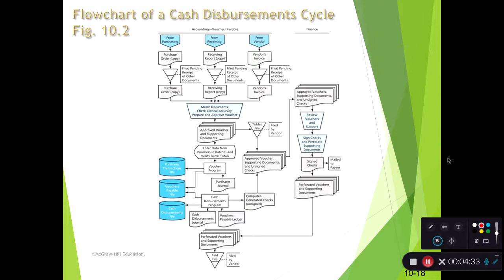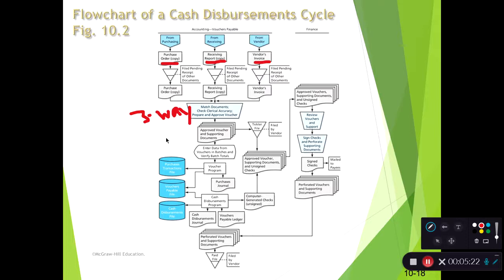Looking at the cash disbursements process, this flowchart is abbreviated to focus just on the cash disbursements piece. We have a purchase order and a receiving report — we don't see what goes into creating those because we're just focused on cash disbursement. We have three pieces of information: the purchase order, the receiving report, and the vendor invoice. We're doing a three-way match — matching the purchase order for prices, the receiving report for quantity of items received, making sure that's what the vendor is billing us for.